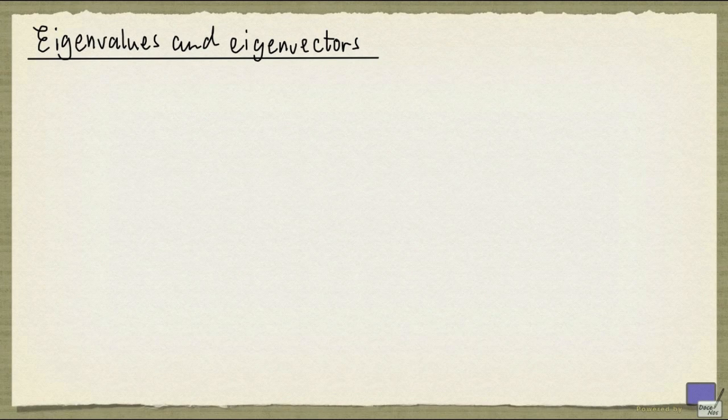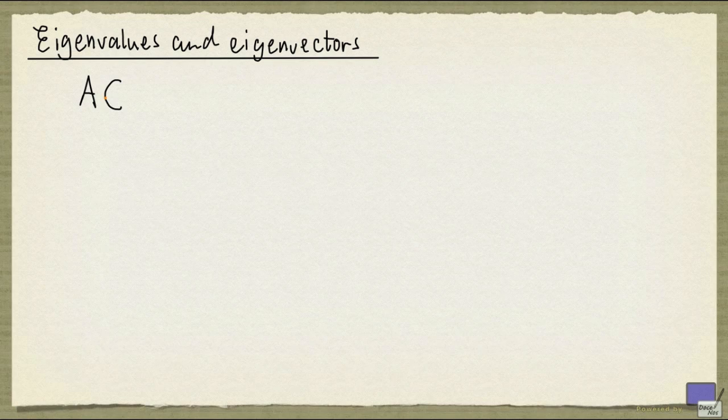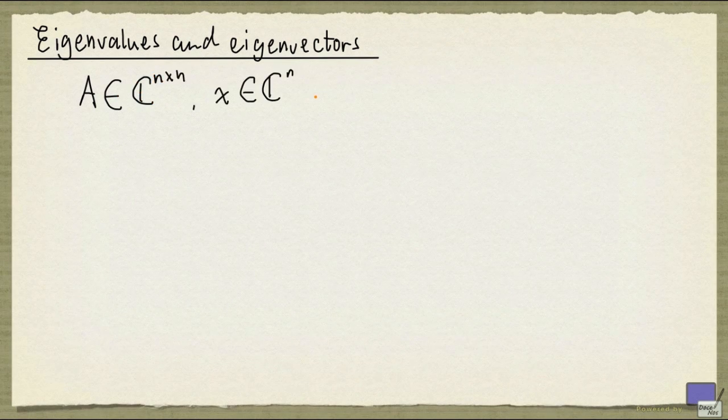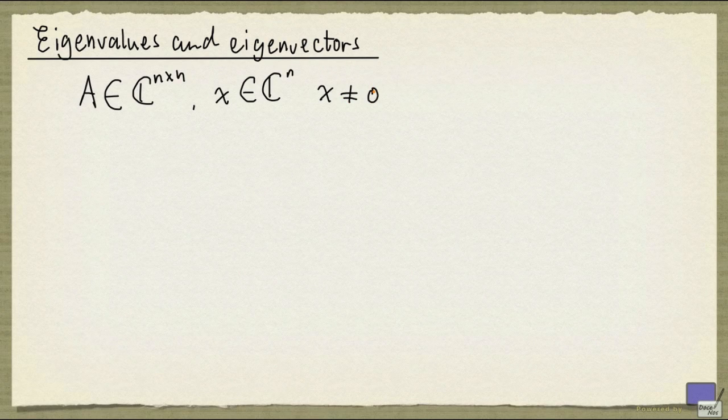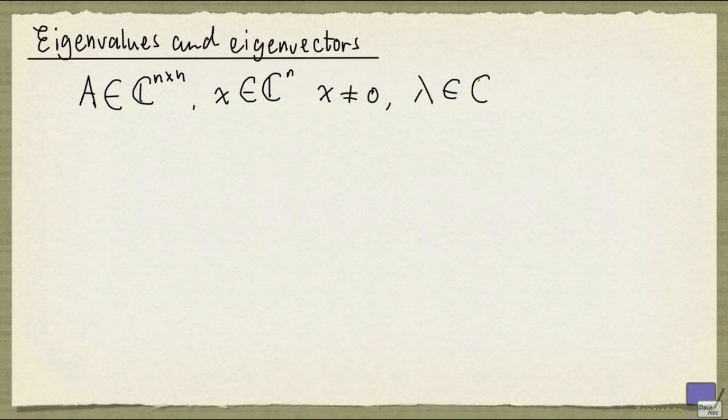We'll start looking at eigenvalues and eigenvectors in this video. Let A be a complex n by n matrix, x be an n vector with complex entries such that x is not the zero vector, and lambda be a complex number.